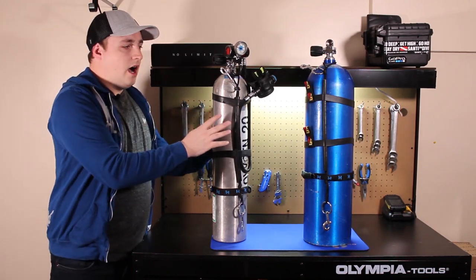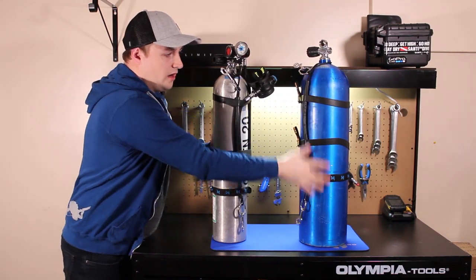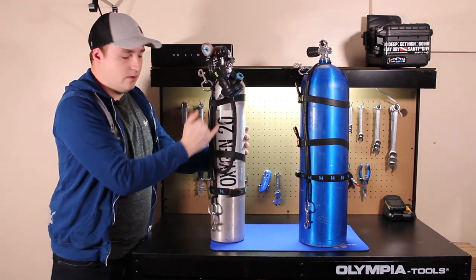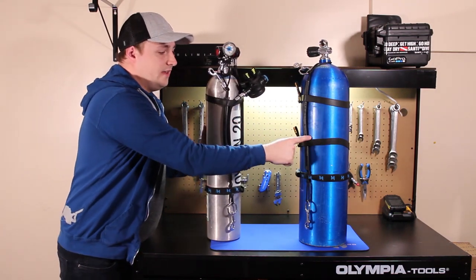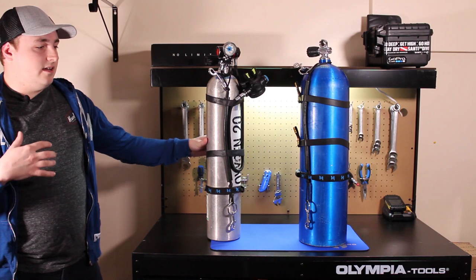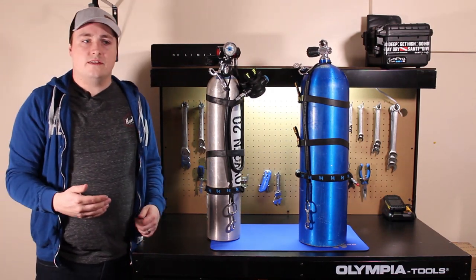So a pony bottle, this would be more of a pony bottle because this is filled with either air or nitrox, whereas this is designated to 100% oxygen, which I'll get into in a little bit later. A pony bottle basically attaches to the front of your chest and it's just something that's going to hang on you for the majority of the dive.